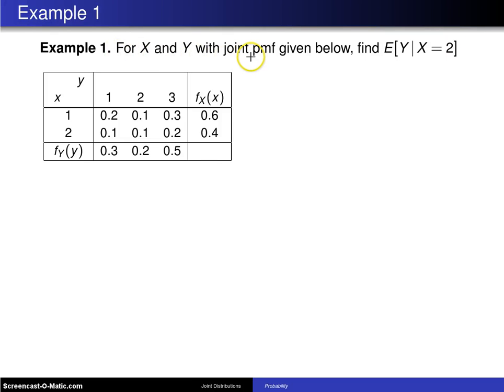For x and y with joint probability mass function given below, find the expected value of y given x equals 2.